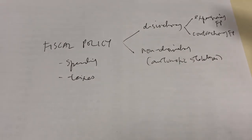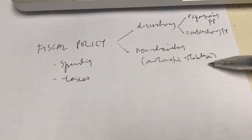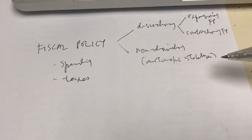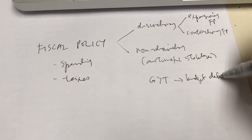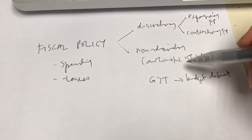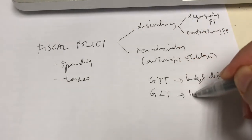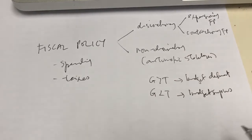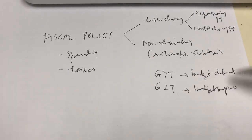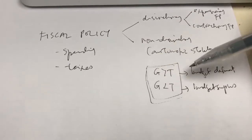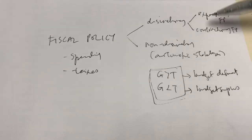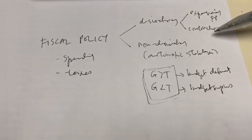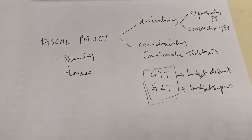I hope you're clear with that basic summary. With the automatic stabilizer, G would either be higher than T or lower than T. When government spending is more than taxation, this leads to a budget deficit. When government spending is less than taxation, this is a budget surplus. In practice, both the automatic stabilizer and discretionary fiscal policy are intertwined and happen at the same time, which is why we need to learn how to evaluate fiscal policy.